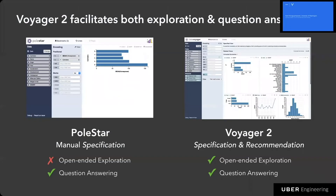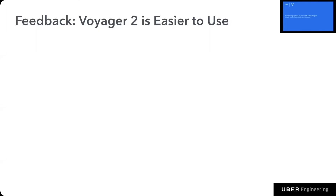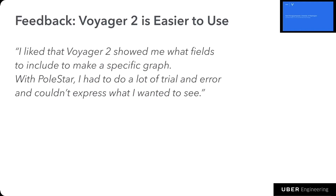We also ran a user study. We compared Voyager 2 — which combines chart specification and recommendation — with Polestar, which is purely manual specification. We found that users prefer Voyager 2 for open-ended exploration, and that Voyager 2 performs as well as Polestar for question answering. Interestingly, despite having more features than Polestar, many subjects expressed that Voyager 2 is easier to use. One said: 'I like that Voyager 2 shows me what fields to include to make a specific graph. With Polestar, I had to do a lot of trial and error and couldn't express what I wanted to see.'